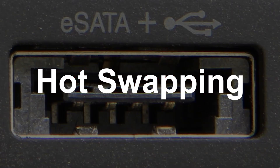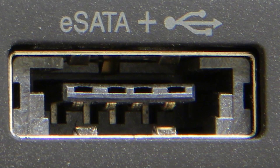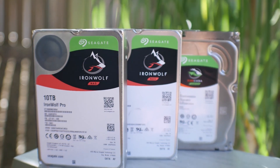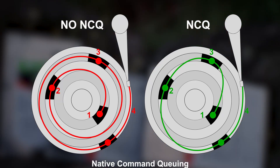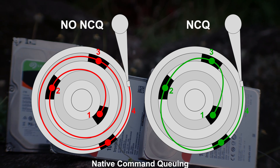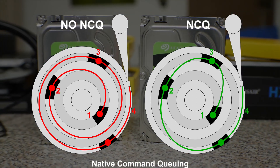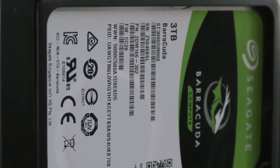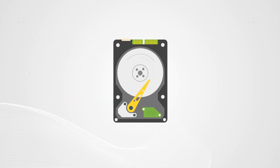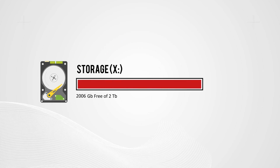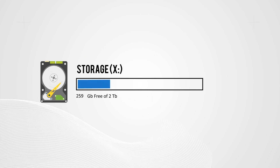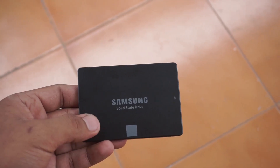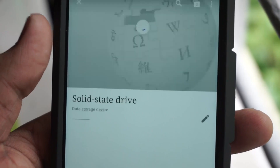AHCI is faster than the older IDE standard. It also supports hot swapping — you no longer have to turn off your computer to remove a device from eSATA. AHCI also supports Native Command Queuing, or NCQ. This helps the drive handle multiple requests to fetch data at one time. In HDDs, which have physical moving parts, NCQ means the read/write heads don't have to move as much, increasing drive lifespan and access speed.